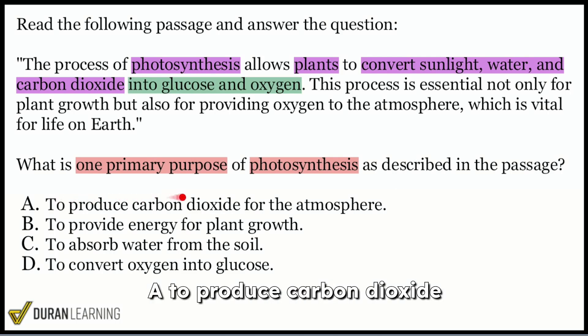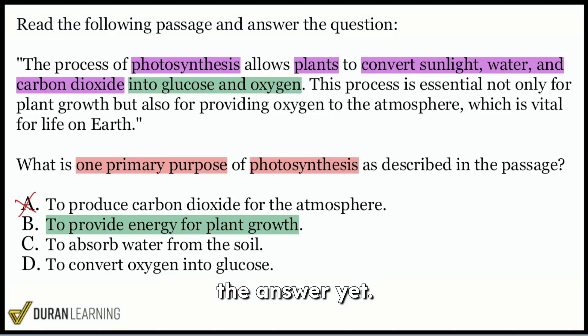A, to produce carbon dioxide for the atmosphere? No, it provides oxygen to the atmosphere, not carbon dioxide. So I'm going to say A is incorrect. If I take a look at choice B, to provide energy for plant growth? Well, photosynthesis allows plants to convert sunlight, water, carbon dioxide into glucose and oxygen. And that's essential for plant growth. Provide energy for plant growth? Yeah, that seems like a pretty good answer to me. I'll highlight it, but I won't say that that's the answer yet.